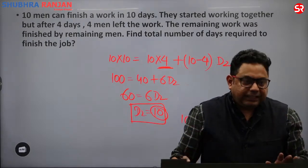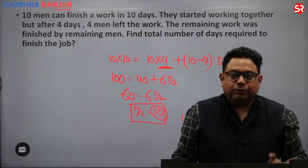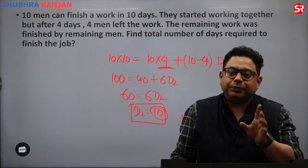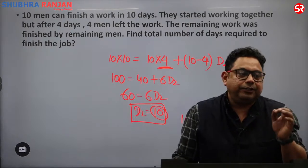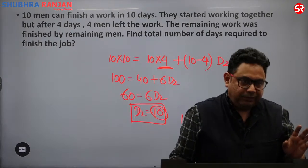The classic thing is that total work is given — 10 people in 10 days means 100 units are to be made. Once you know the total units, you can handle any variation of men joining or leaving.